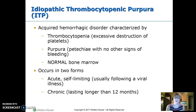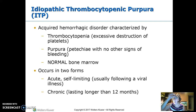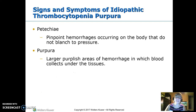If a bone marrow biopsy is done, it comes back totally normal. Most of the time this is an acute, self-limiting condition that often follows a viral illness. It can turn chronic, meaning it lasts more than 12 months. What we're really looking for are the petechiae and the purpuric rash.